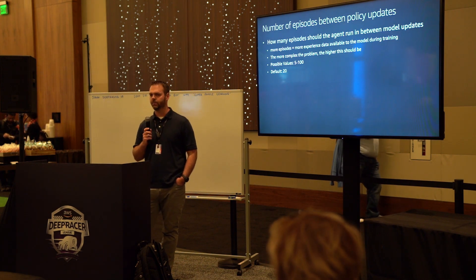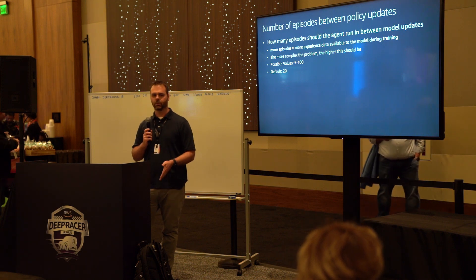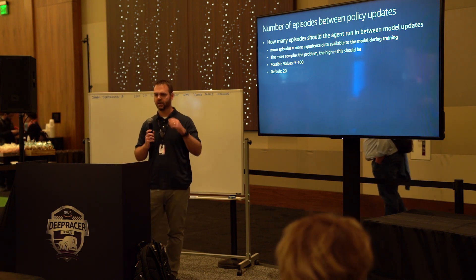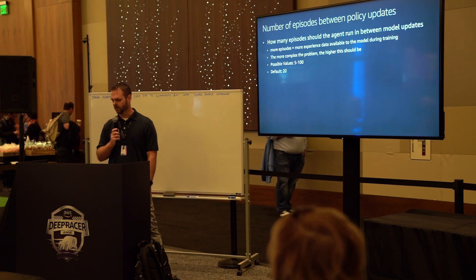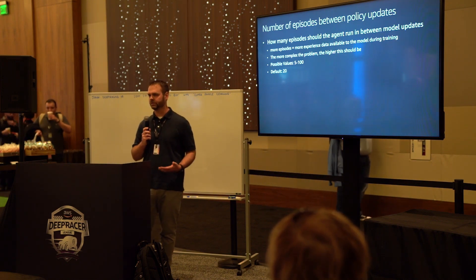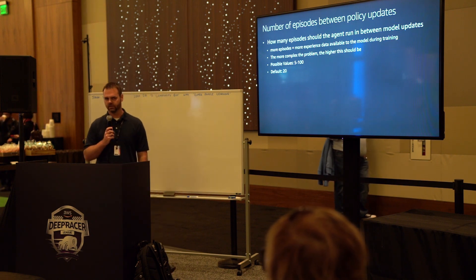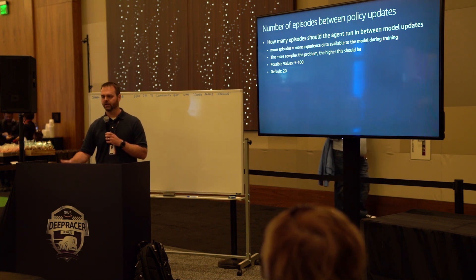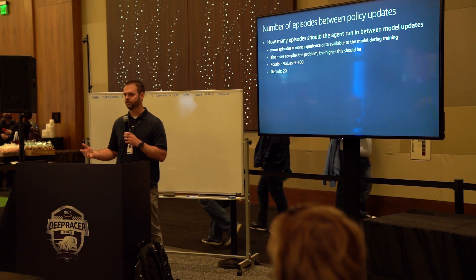Last, we have the number of episodes between policy updates. Episodes are just the attempts for the agent to get all the way around the track. The number of episodes determines how many attempts it makes before it switches to the training process — you've all seen in the simulator where the car just stops for a period of time because it's in the training process. The more episodes you set, the more experience data you can generate. The default is 20, but you can go as low as 5 and up to 100. Generally, as the model starts to converge, it's a good idea to dial this back because if the car is getting around repeatedly, you're just going to be waiting a long time for the policy updates to happen.